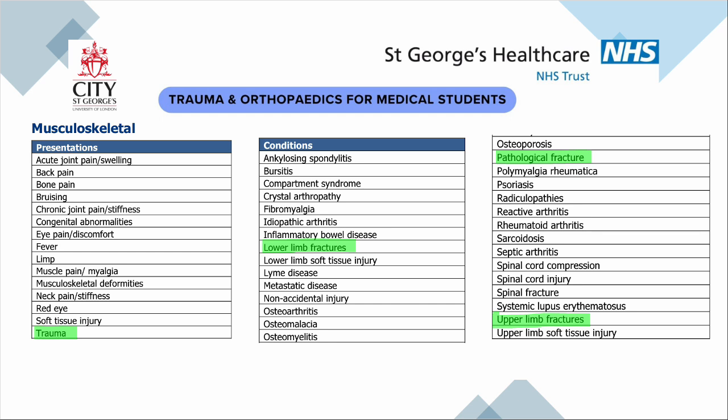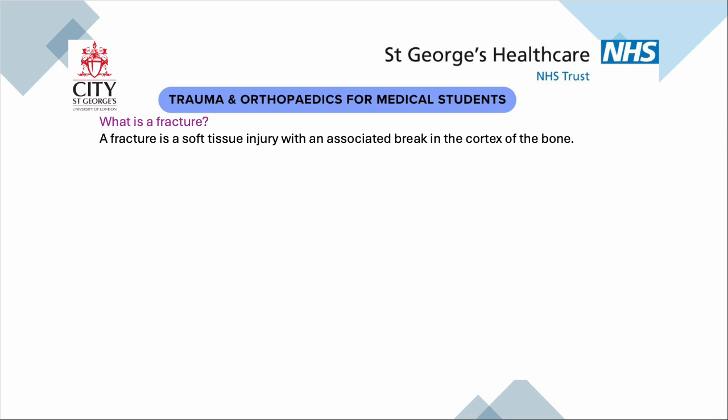As you can see from the medical licensing assessment this covers a presentation and a number of conditions. Very simply, what is a fracture? Remember this is a soft tissue injury that has an associated break in the cortex of the bone. The reason for phrasing it like this is you have to remember that what we look at a lot of the time is x-rays, and what we're really dealing in is a soft tissue injury as well as what we can see on the x-rays.